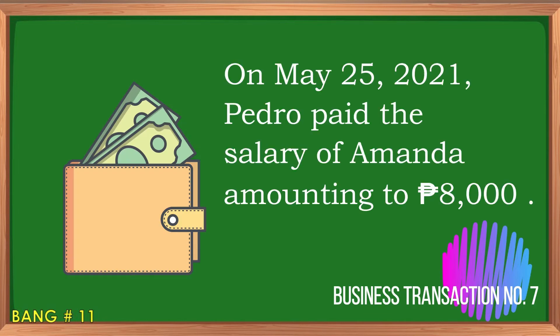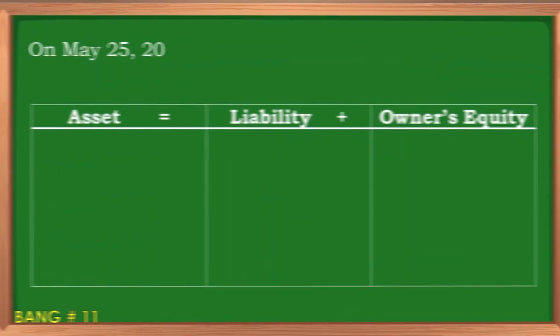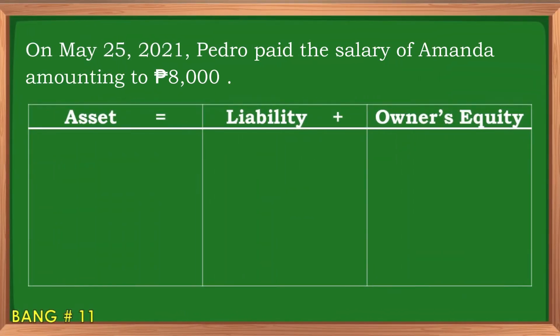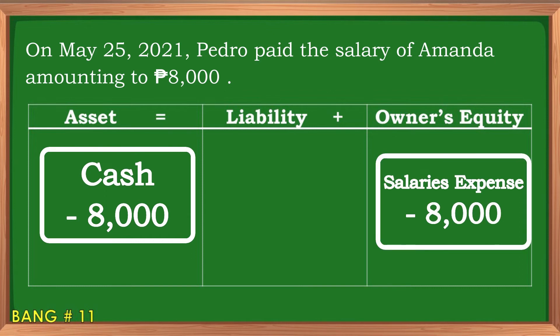Business transaction number seven: On May 25, 2021, Pedro paid the salary of his secretary Amanda amounting to 8,000 pesos. The effects of this transaction are a decrease in cash under asset and a decrease in owner's equity using salaries expense account, both amounting to 8,000 pesos.